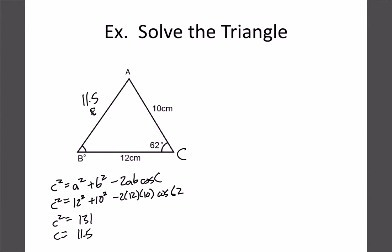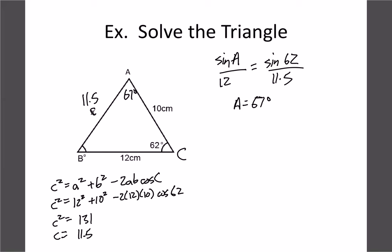Now that we have all three sides, we can use sine law for the remaining angles. For angle A: sin A / 12 = sin 62° / 11.5, giving A ≈ 67°. For angle B, use the 180° rule: 180 − 62 − 67 = 51°. So quite often you'll use cosine law once to get started, then sine law and regular angle rules are sufficient for the rest.